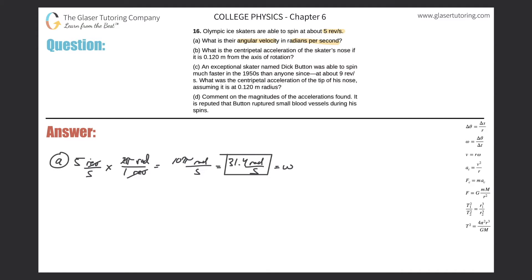Alright, so letter B now. What is the centripetal acceleration of the skater's nose if it is 0.12 meters from the axis of rotation? What that basically means is that the radius of rotation is 0.12. So they basically gave me the radius of rotation, 0.120, and we're trying to find the centripetal acceleration.